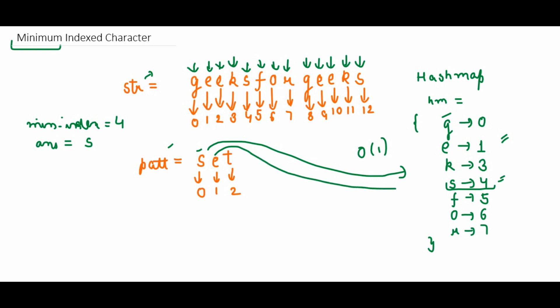E is present at the first position. Since one is smaller than the current minimum index of four, we update minimum index to one and update the answer to e. Then we check t — it is not present in the hash map, so we do nothing.